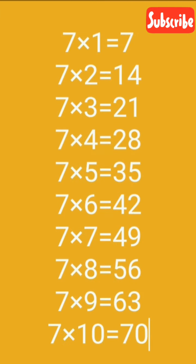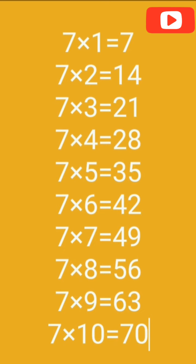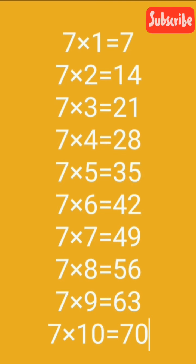7th Table. 7 1's are 7, 7 2's are 14, 7 3's are 21, 7 4's are 28, 7 5's are 35, 7 6's are 42.